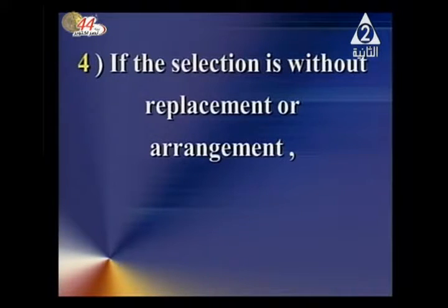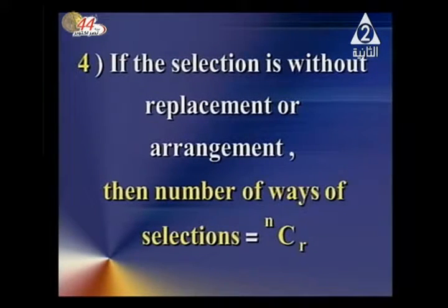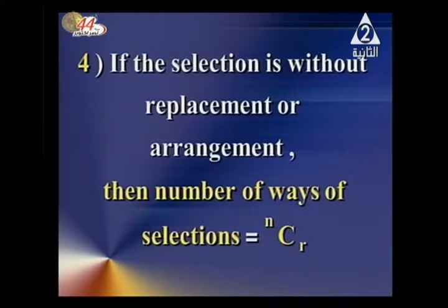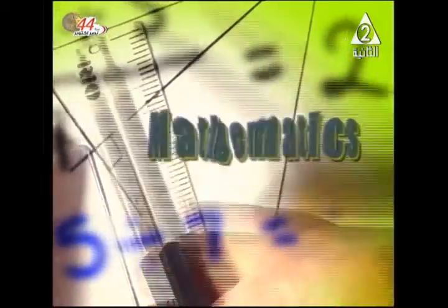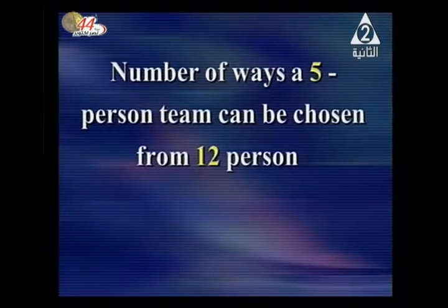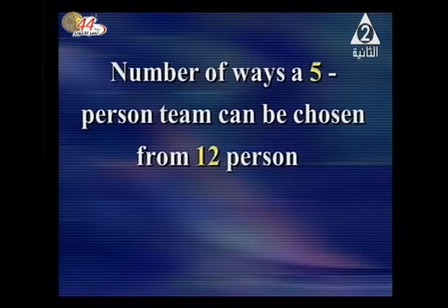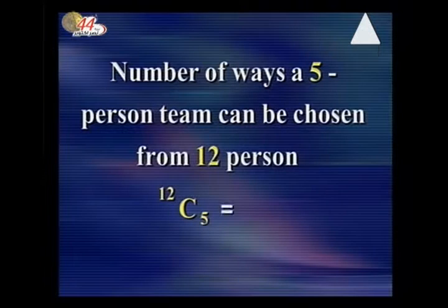Rule four: if the selection is without replacement and without arrangement, the number of ways is nCr. Example: the number of ways a five-person team can be chosen from twelve persons is 12C5, which by calculator equals 792.